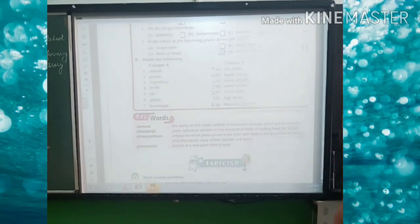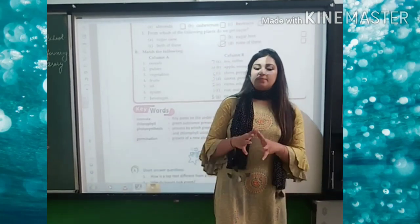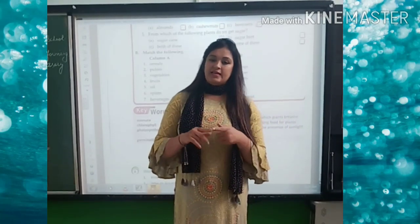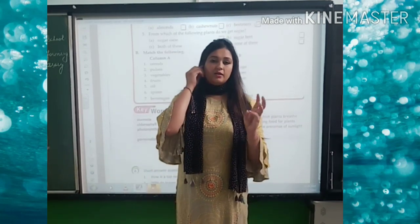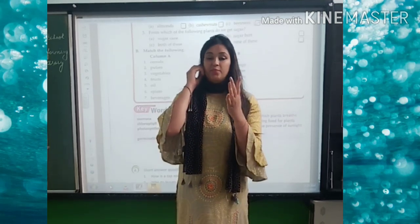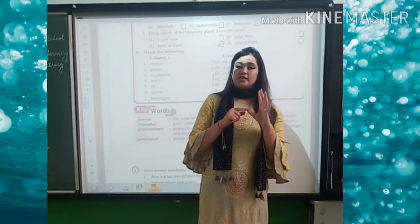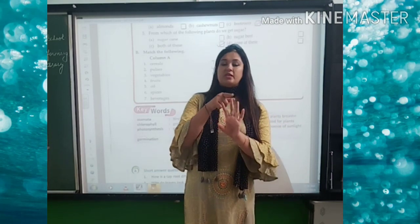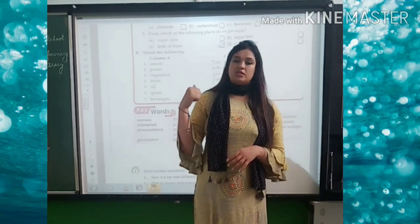So in this chapter we read about various parts of a plant. Firstly root, then shoot. In the shoot there are different parts: flower, bud, leaf, and stem. We talked about the functions of roots, stems, and leaves in detail, and then some useful products of plants.